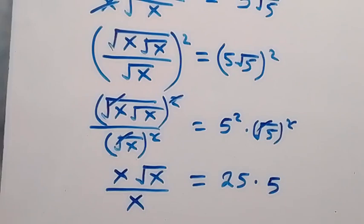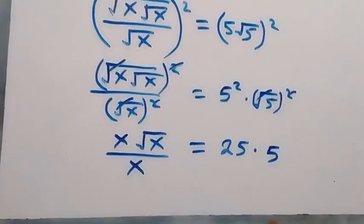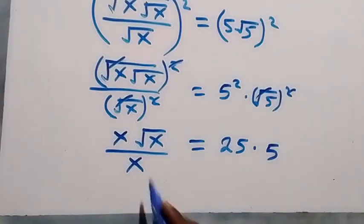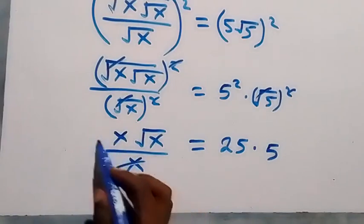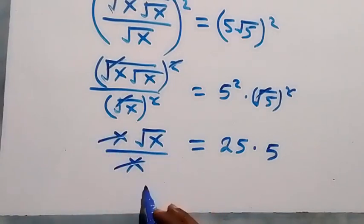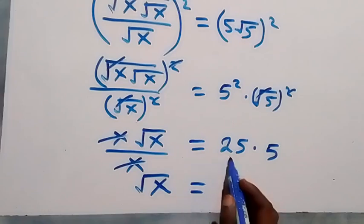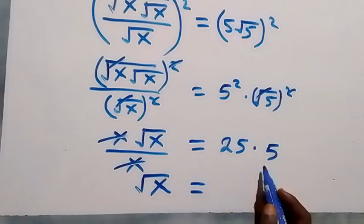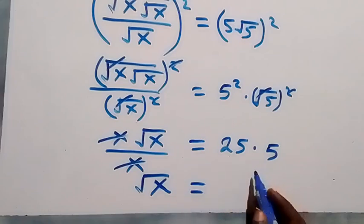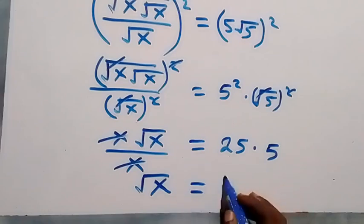In the next term, x cancels out each other, and we have root x left, which equals 25 times 5, giving us 125.